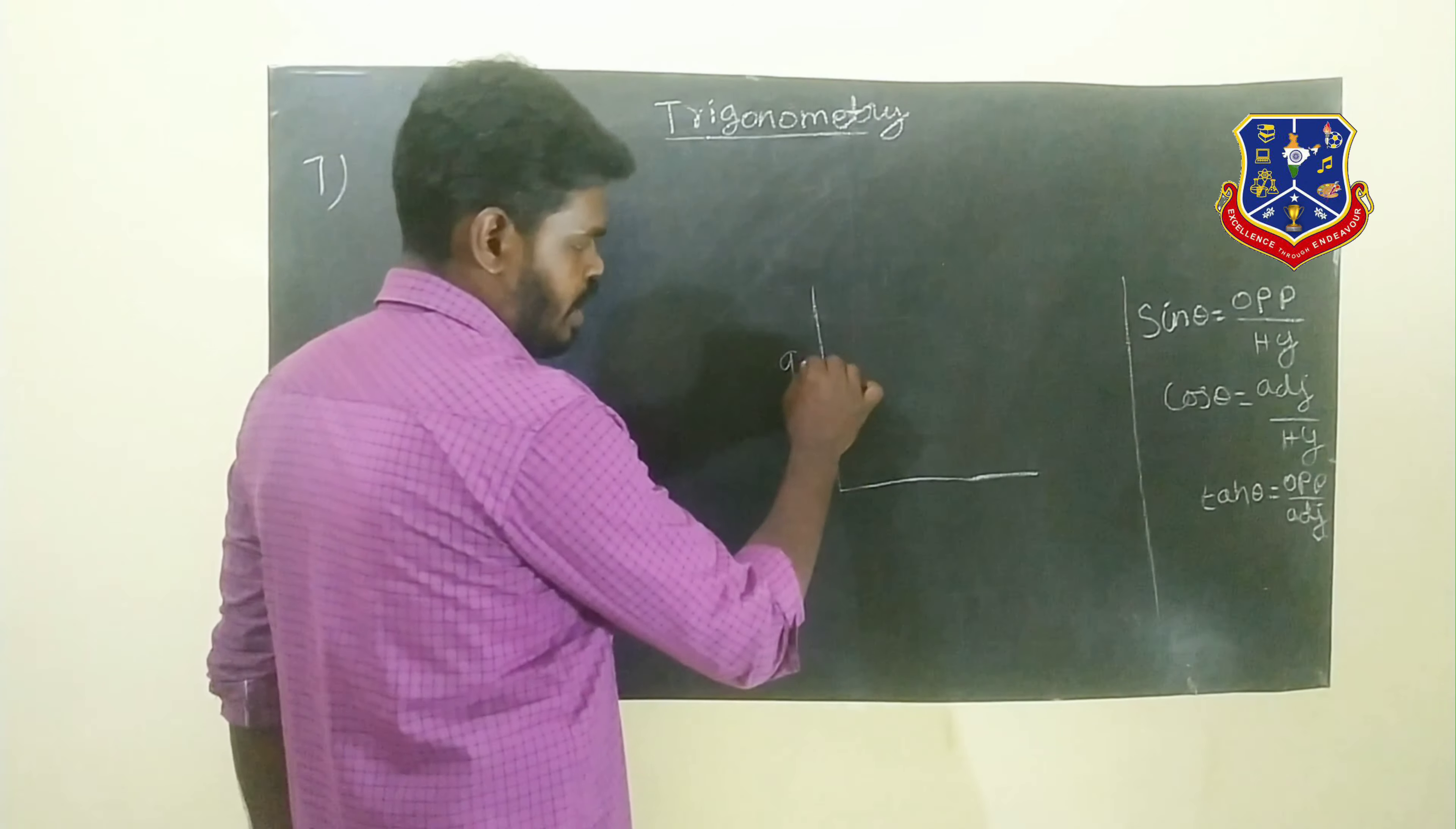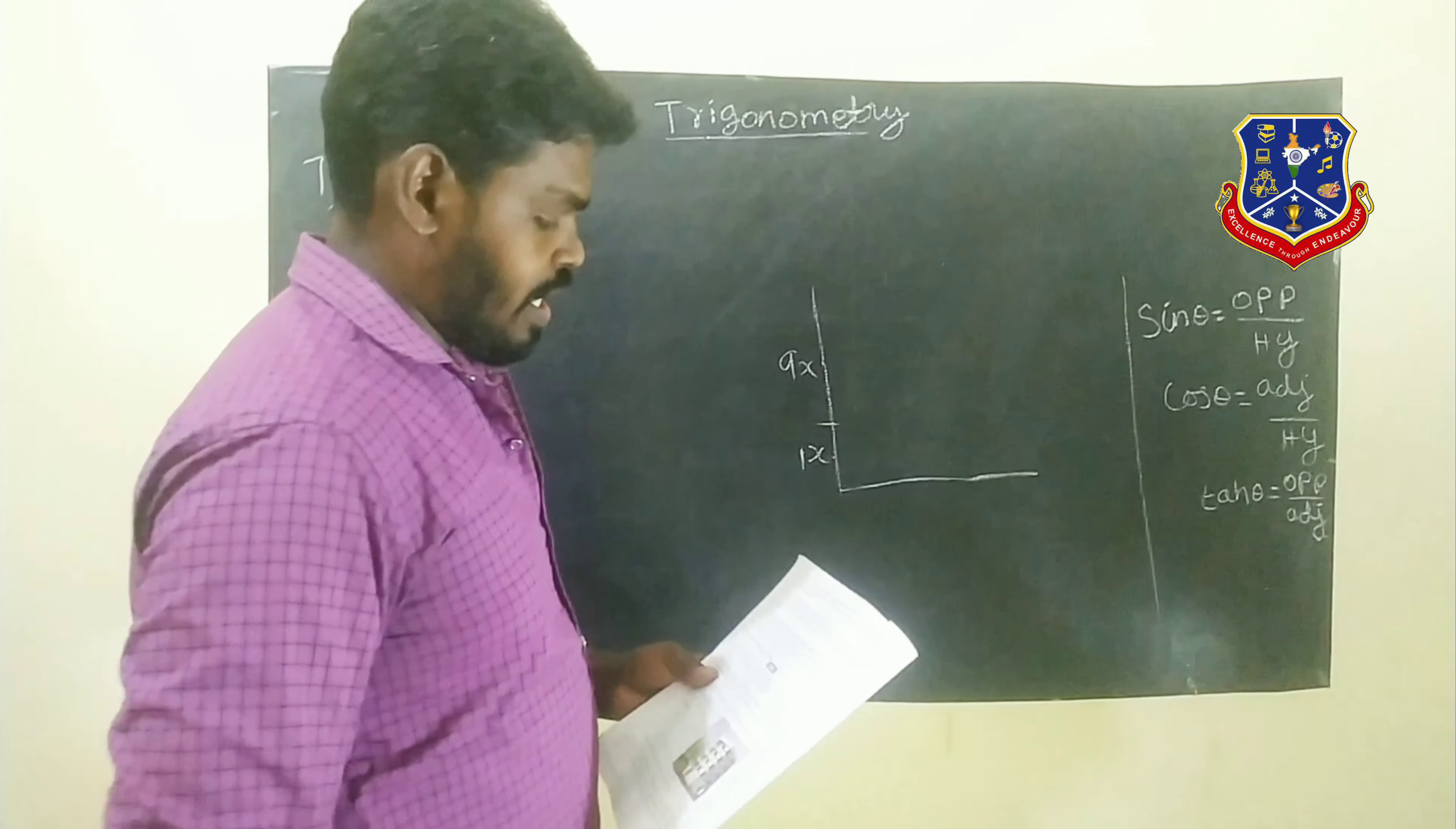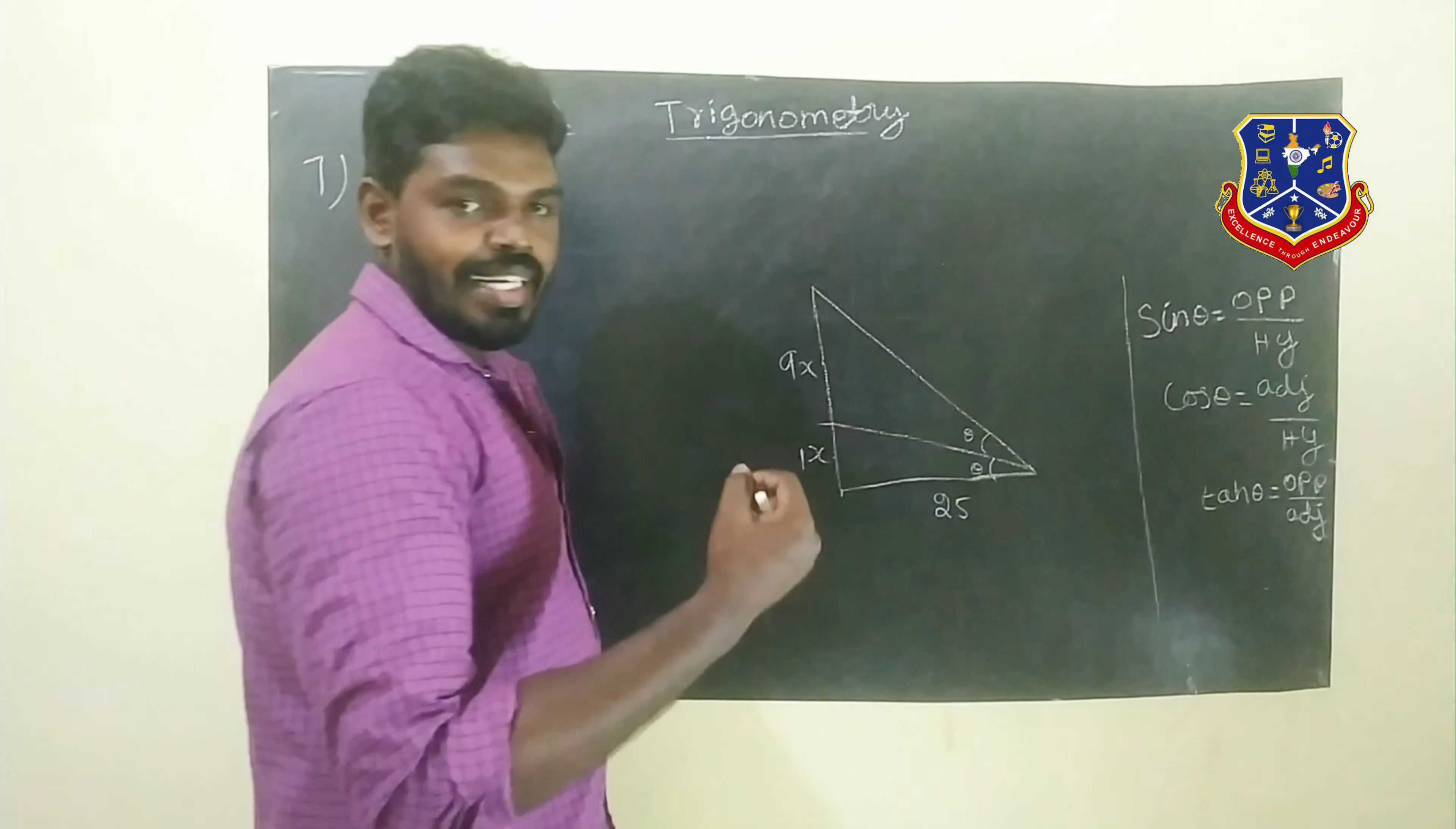The two parts are 9x and 1x. If the two parts make equal angles at a point on the ground 25 meters away from the pole, the two angles must be equal. Equal angle means here is one angle and here is one angle.